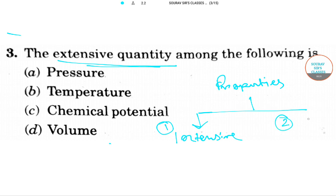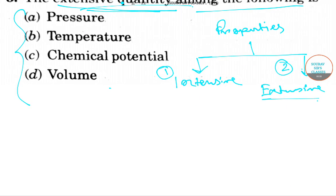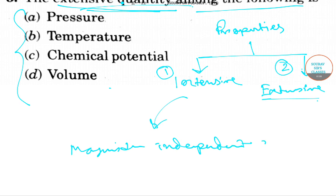We have been asked about extensive property — which of the following is an extensive property. First, let me tell you that intensive property is the property whose magnitude is independent of the size of the system.